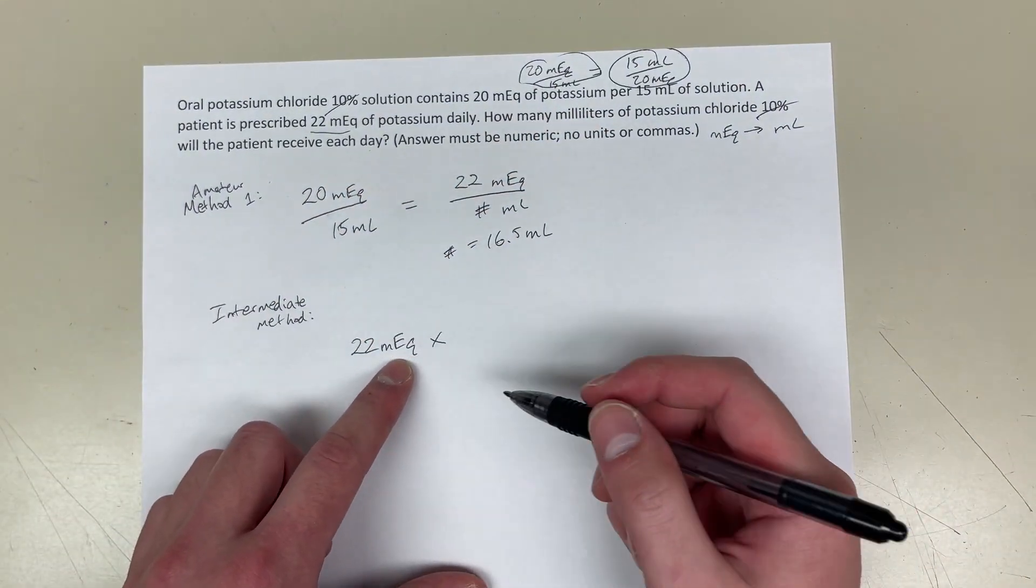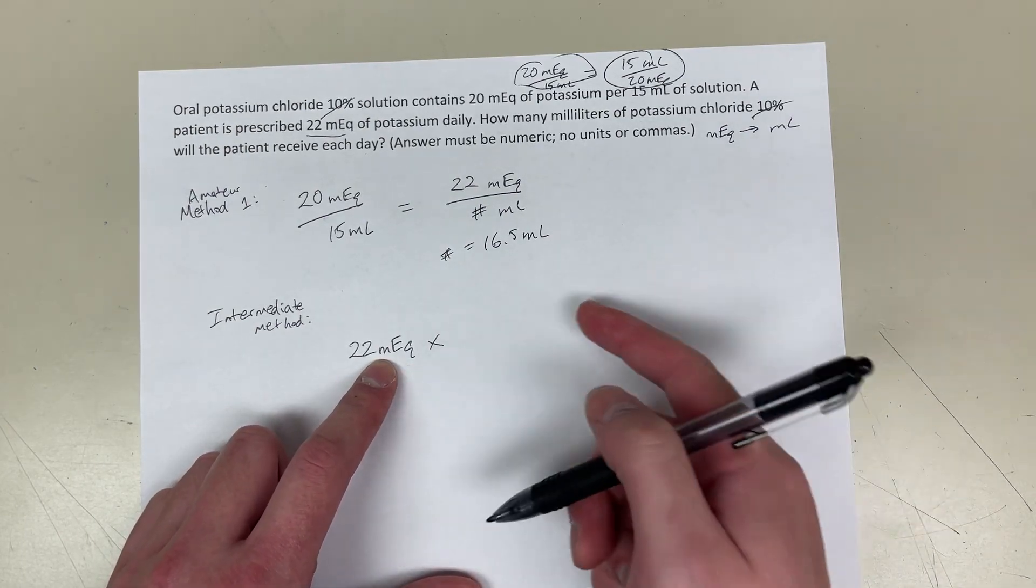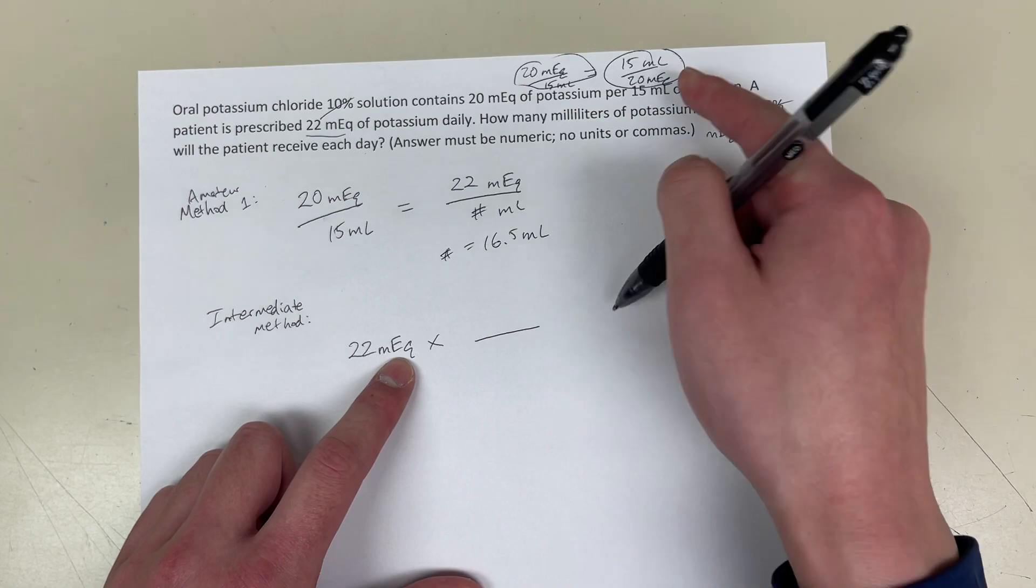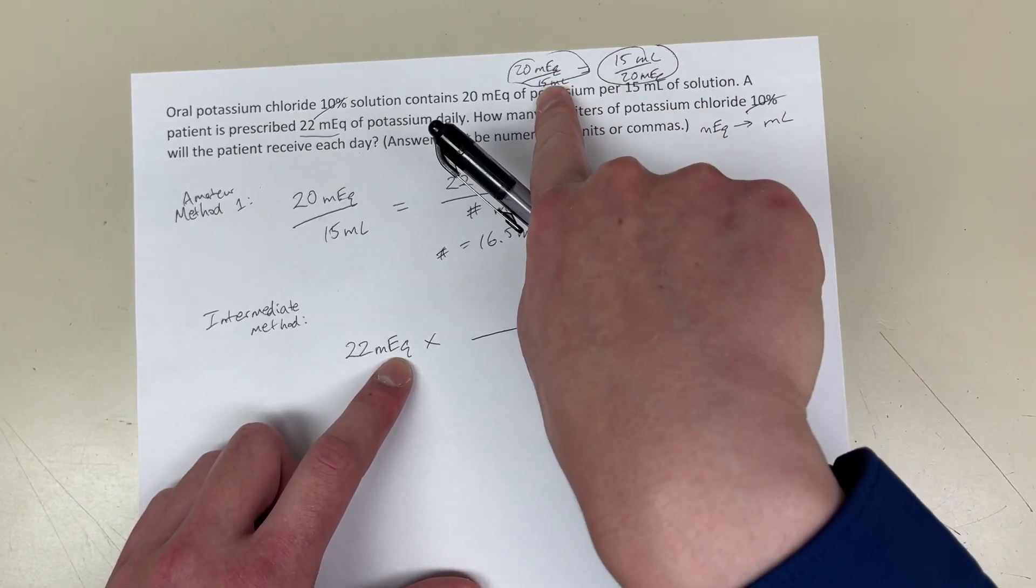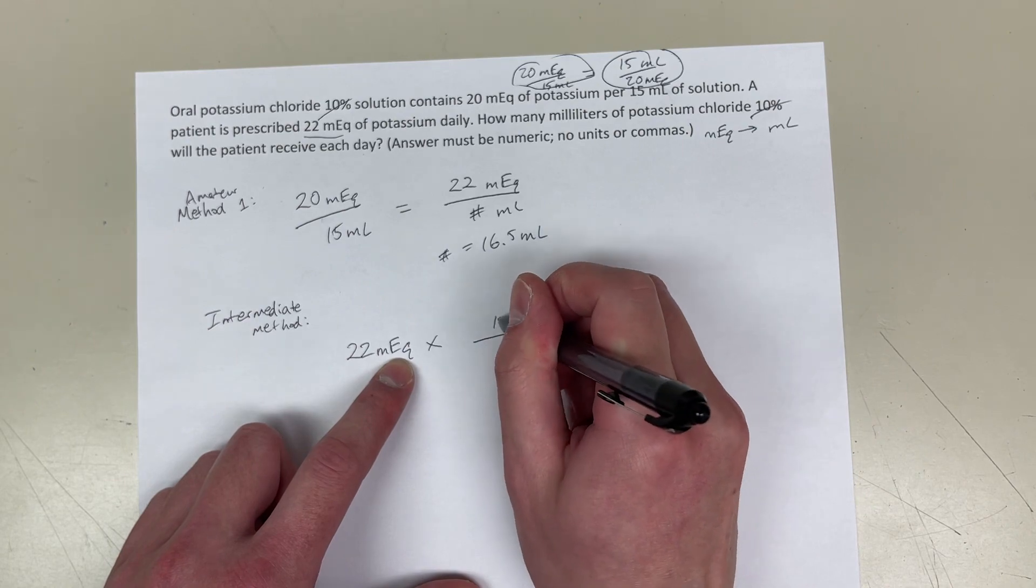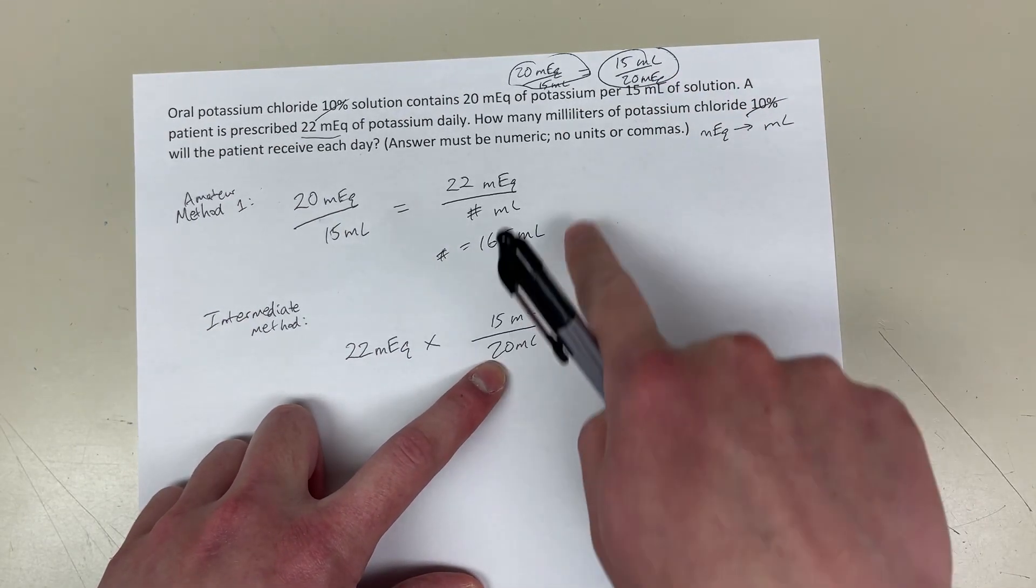And I know which one to use in my method here because I want the milliequivalents to cancel out with the milliequivalents. So, I'm going to make sure the milliequivalent one is in the denominator. So, that's why I know to use this one, not this one. Right? So, I'm just going to use this. Right? 15 milliliters.